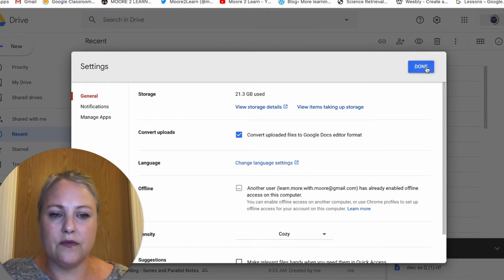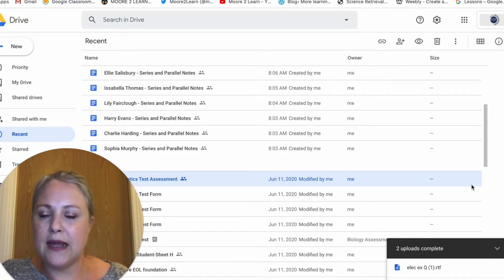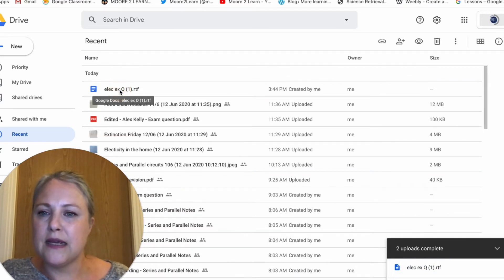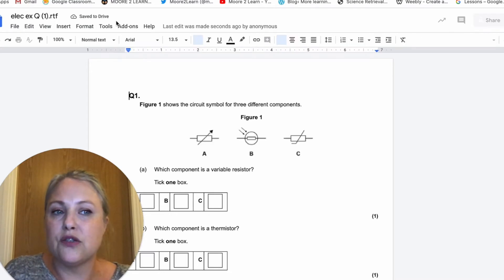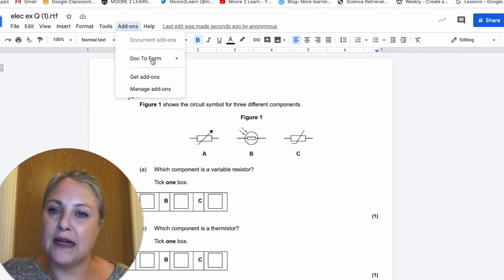So while we're talking it has already become a Google Doc. Here it is as a Google Doc. So here, Add-ons, I've added a free add-on that will change my Google Doc into a Google Form. So I click on my Add-ons, Doc to Form is the add-on.